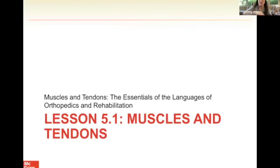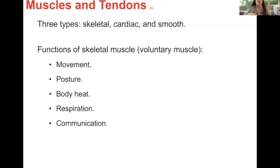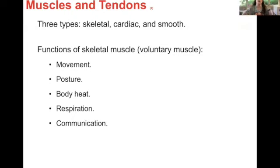Chapter five: muscles and tendons. We have three types of muscle: skeletal, cardiac, and smooth. We totally cover this in Bio 124, so those of you taking Bio 124 next should start jotting this stuff down. Skeletal muscle is the muscle literally connected to your skeleton — it's all voluntary. Unless you have some disorder, you are in control when you move your arm and fingers. Skeletal muscles also help with movement, posture, body heat, respiration, and communication.